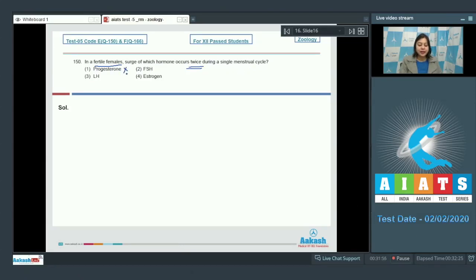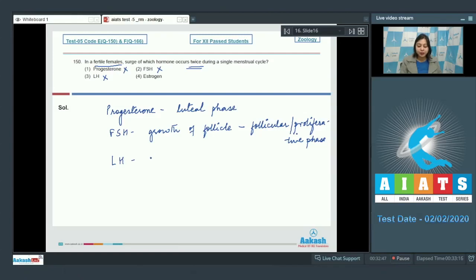Number 1. Progesterone is incorrect as progesterone is the prominent hormone only during luteal phase as it is secreted by corpus luteum. Number 2. FSH is also incorrect as FSH is responsible for growth of follicle and its surge occurs during follicular phase or proliferative phase. Number 3. LH is also incorrect as LH surge occurs just prior to ovulation.